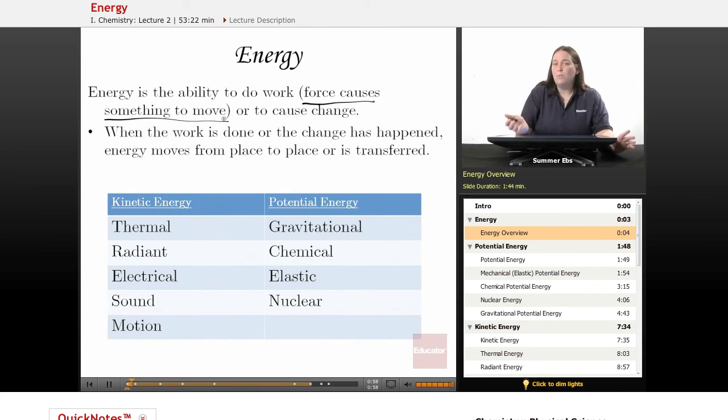There are two main types of energy: kinetic energy and potential energy. Within those two categories, we have many more options. Kinetic energy is energy of movement, and in that we have thermal, radiant, electrical, sound, and motion. The energy of movement could be an object or it could be the movement of atoms, molecules, electrons, or waves within a substance.